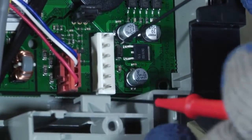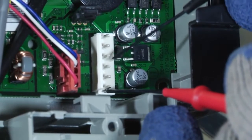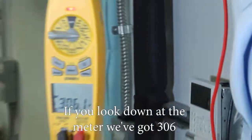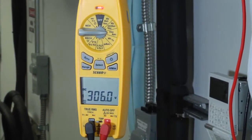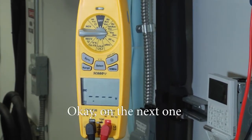If you look down at the meter, we got 306, which is a good DC link reading.